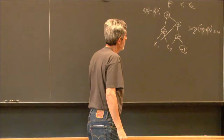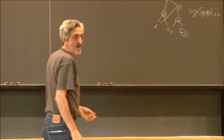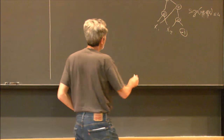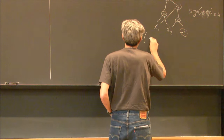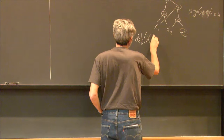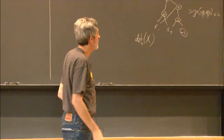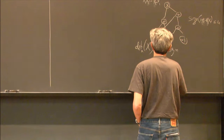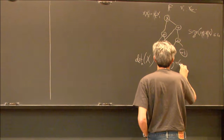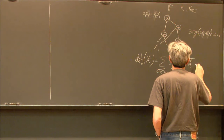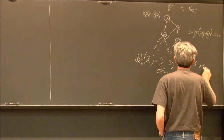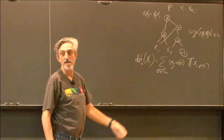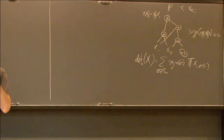Two major polynomials we study are the determinant and the permanent. The determinant of an N by N matrix of variables — what's the complexity of this? How many operations do you need to compute the determinant? N cubed. So the size of the determinant of N is N cubed.